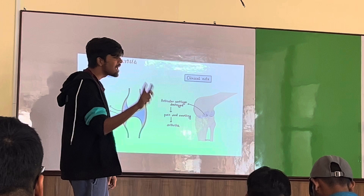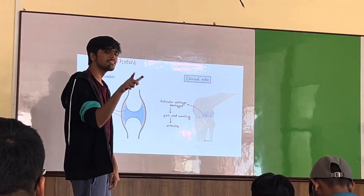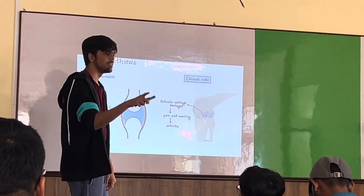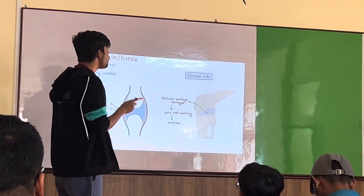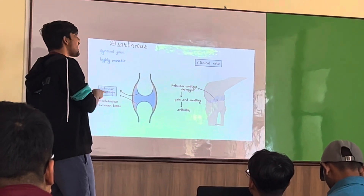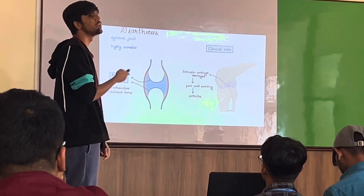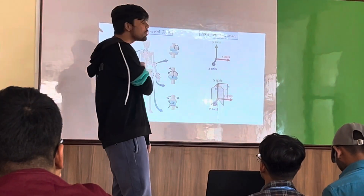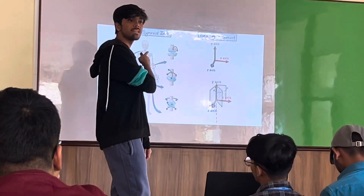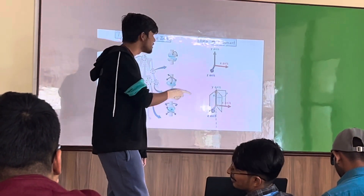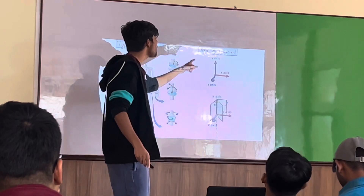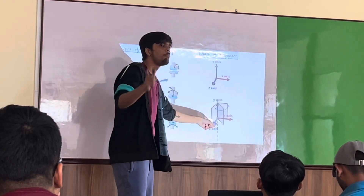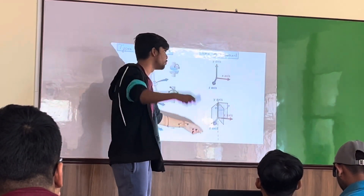Arthritis occurs at synovial joints. This brings us back to the topic: where exactly are synovial joints found in our body? We are going to look at the various types of synovial joints on the basis of the axis about which they move.